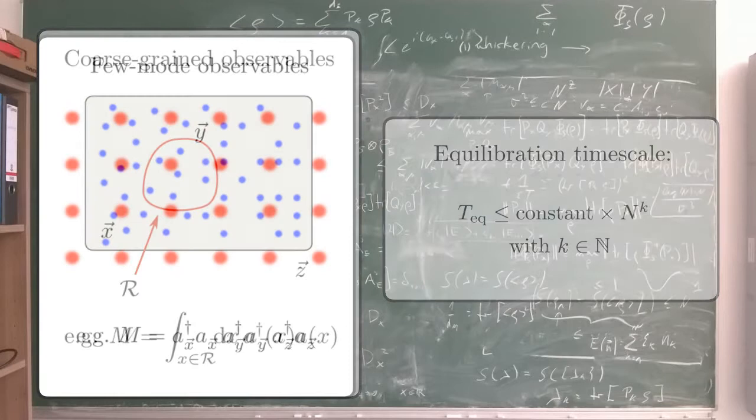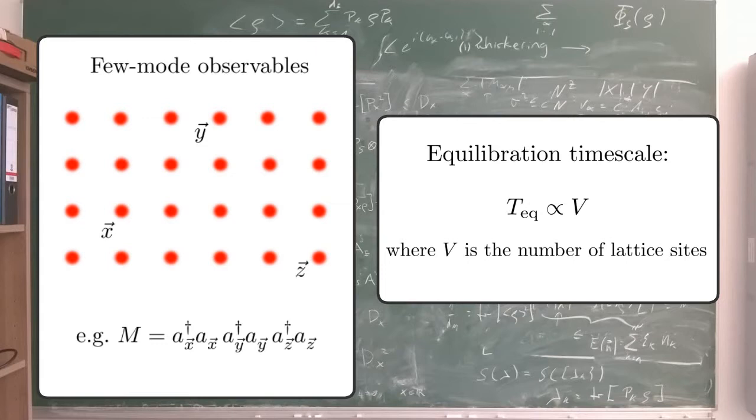Also, for few mode measurements on lattice systems, the equilibration timescale is often at most linear in the number of lattice sites.